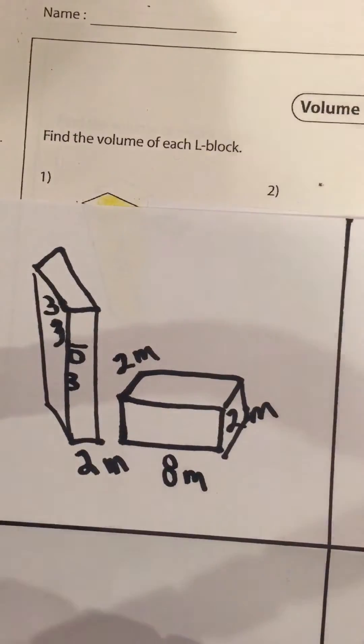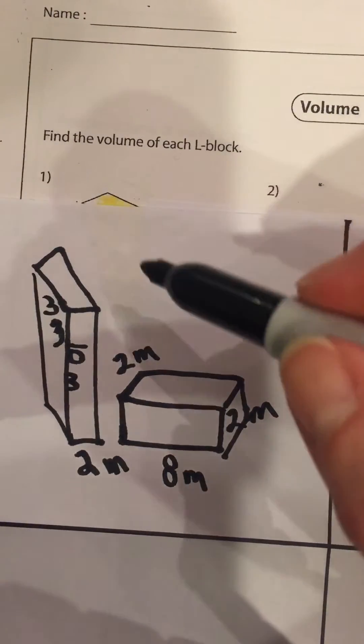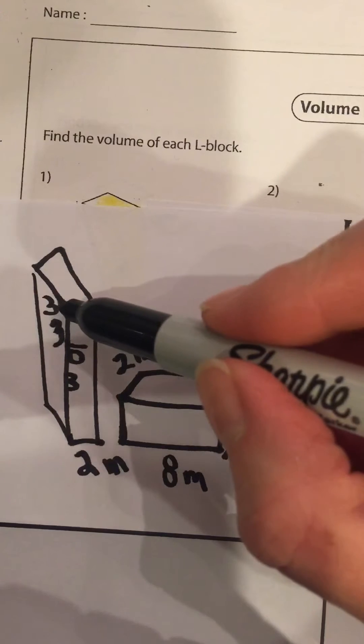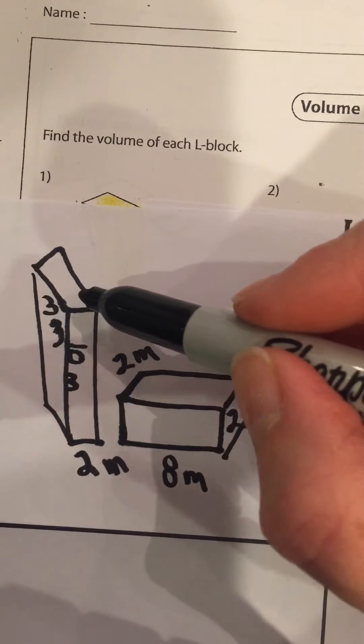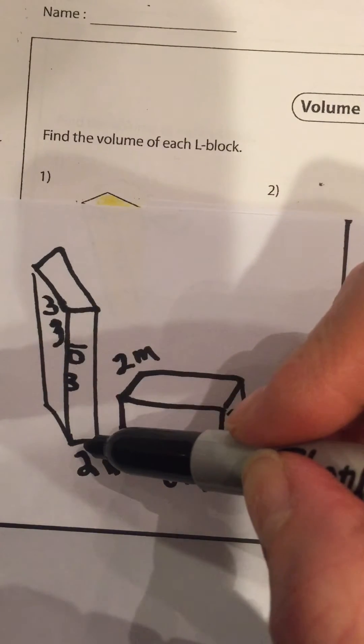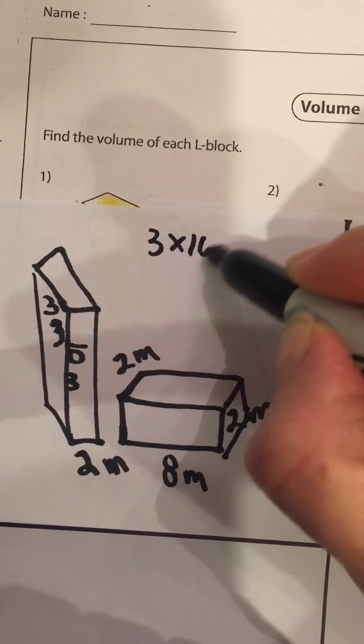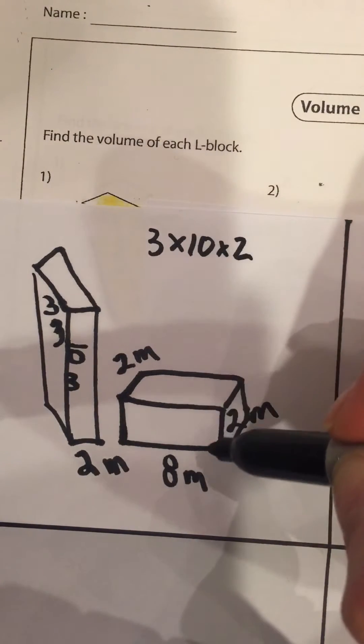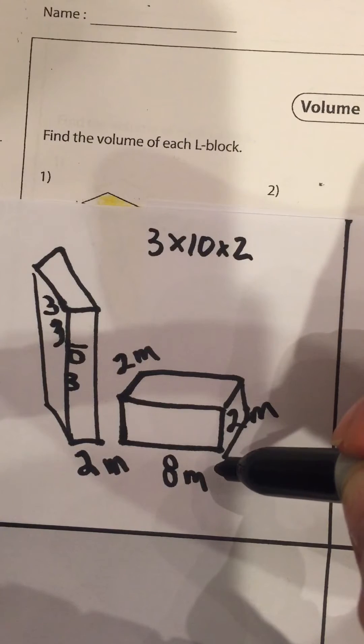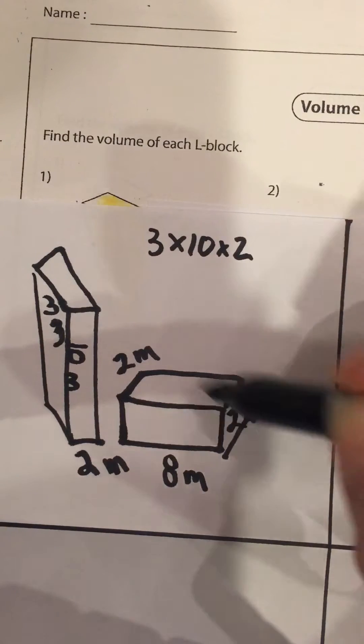Okay, now that we have all our dimensions let's solve. This shape here we have a three by ten by two, three by ten by two, and this shape here we have an eight by two by two.